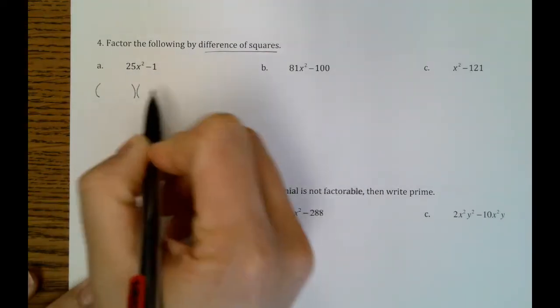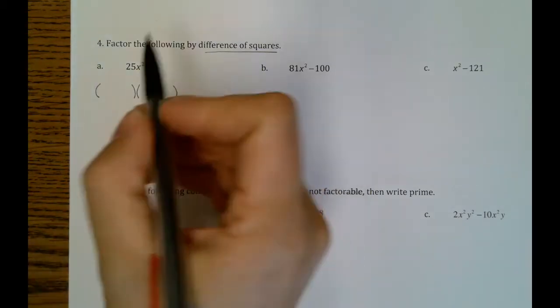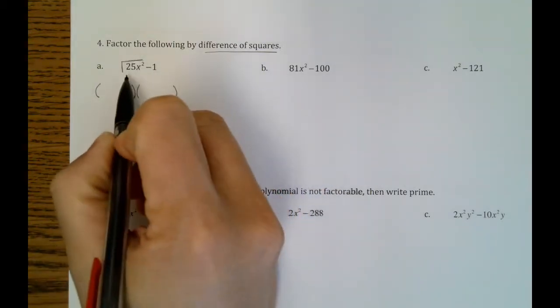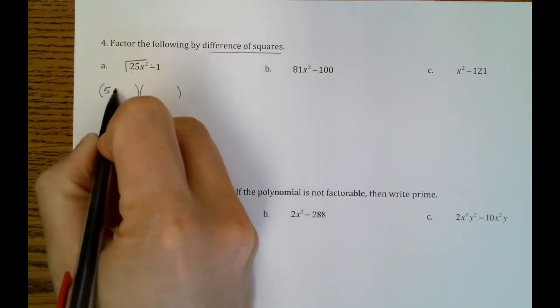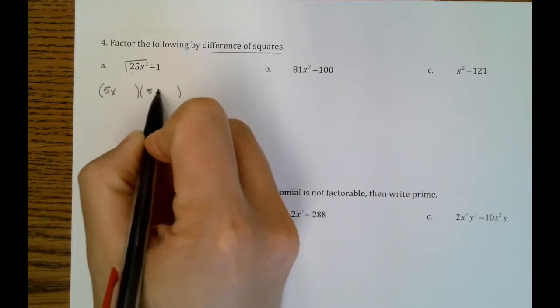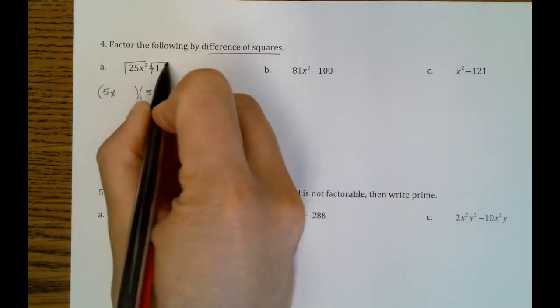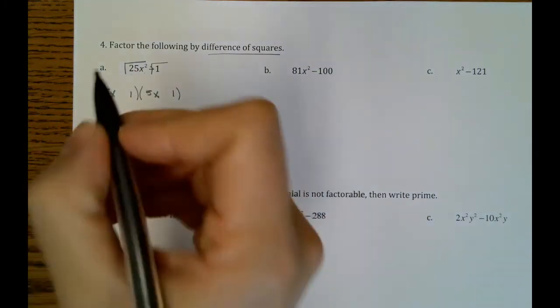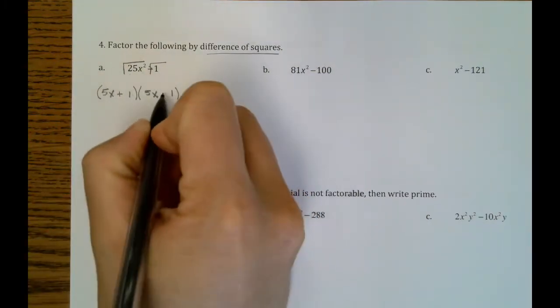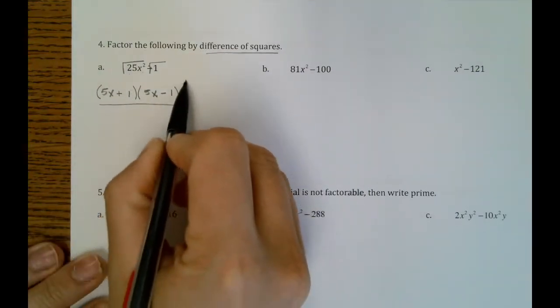So we're going to go ahead and put in our two parentheses there. And we take the square root of the first term, the square root of 25x squared is 5x. And that will go in the first slot for each parentheses. The square root of 1 is 1. That'll go in the second slot. And then one of them will have an addition sign, and one will have a subtraction sign. And that's our final answer.